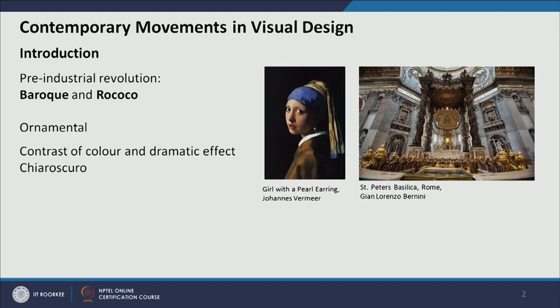Before the industrial revolution, art and architecture had a perception of over-ornamentation. Baroque and rococo was the dominant style in architecture and art — mostly done in cathedrals and chapels. We can see these movements before the industrial revolution, from Greek and Roman architecture through Gothic, Victorian styles, and leading up to baroque and rococo as the predominant style just before the industrial revolution.